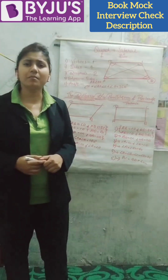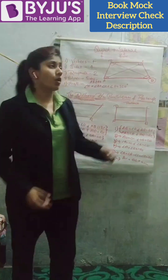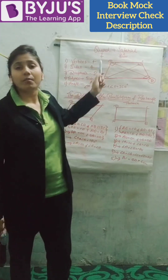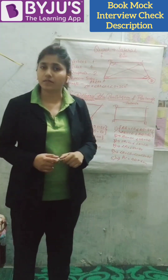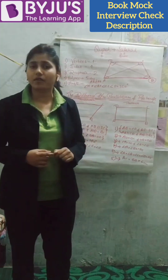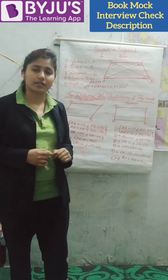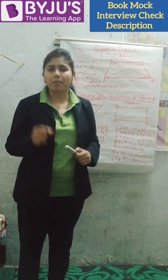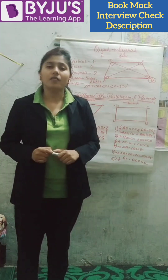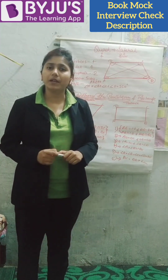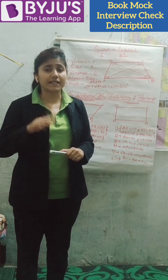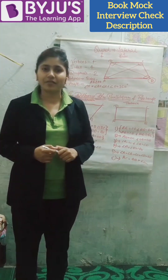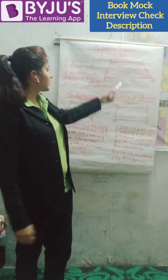What is the meaning of quadrilateral? Quad plus lateral. The meaning of quad is four, and the meaning of lateral is sides. So the definition of quadrilateral is: a plane figure which is bounded by four line segments is known as a quadrilateral. Look at this figure.